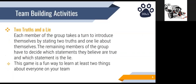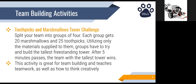Here is an example of a team-building game that promotes core values. The first activity is Two Truths and a Lie. Each member of your team takes turns introducing themselves by stating two truthful things about themselves and one thing they made up, and the rest of the group decides which statement is the lie. This game is a fun way to learn more about the people on your team. Another activity is the Toothpicks and Marshmallows Tower Challenge. Divide your team into groups of three, four, or five, give each group 20 marshmallows and 25 toothpicks, and try to build the tallest freestanding tower in five minutes. The team with the tallest tower wins. This challenge is great for teaching teamwork and creative thinking.